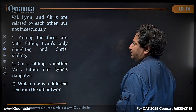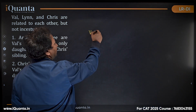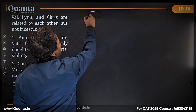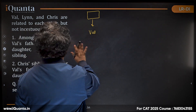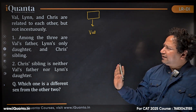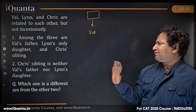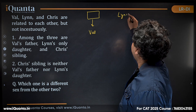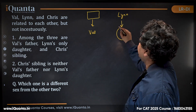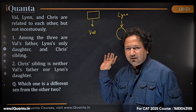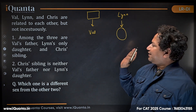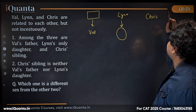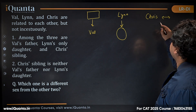From the first statement: 'among the three are Val's father' — so Val is a child, and Val's father must be male, either Lynn or Chris. 'Lynn's only daughter' — so Lynn has exactly one daughter, who is female; we don't know who it is yet. 'Chris's sibling' — Chris has a sibling; we don't know the gender of Chris or the sibling yet.